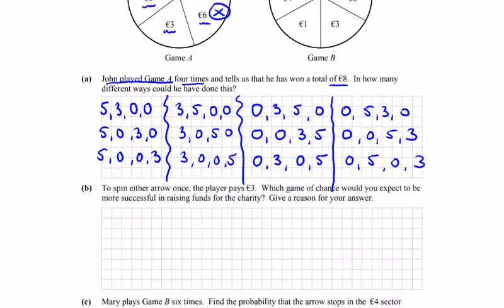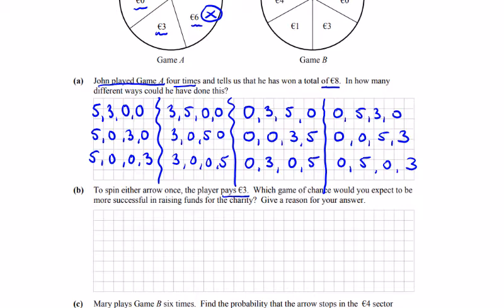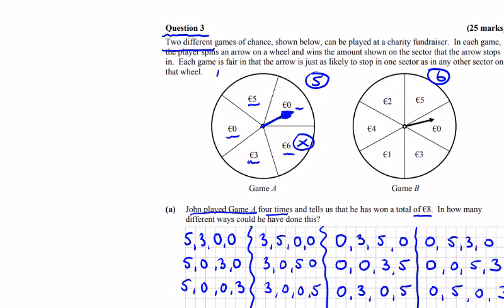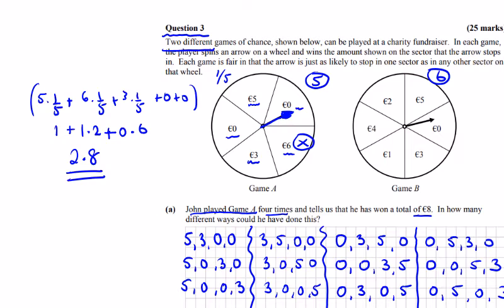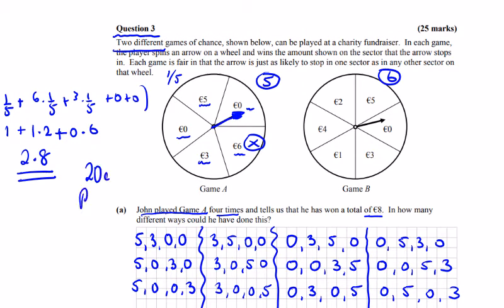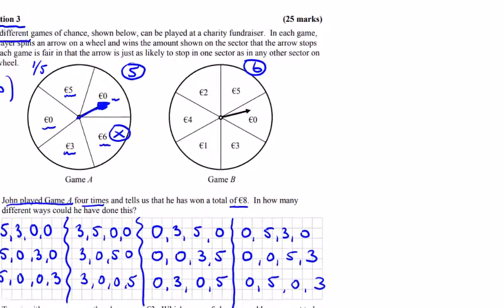Part B: To spin either arrow once, the player pays three euros. What game of chance would you expect to be more successful? So we're looking at expected value here. Each sector here is a fifth, so we'll start with two zeros. The first one is just 5 by a fifth plus 6 by a fifth plus 3 by a fifth. That's going to give 5 over 5 plus 6 over 5 plus 3 over 5, which is 2.8. So you're going to pay 2.8 out in the long run. You're taking in three, so you're gonna make 20 cent profit on Game A.